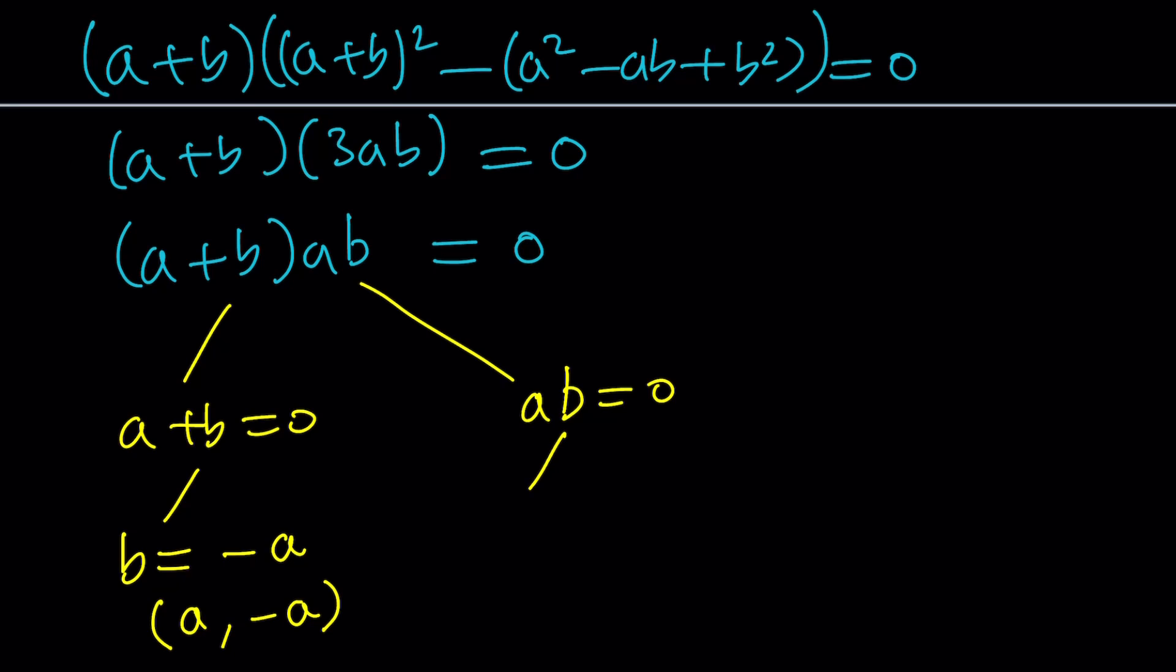Or we can write this as a equals 0 or b equals 0. It doesn't have to be both, but if either one is 0, then it's going to work.